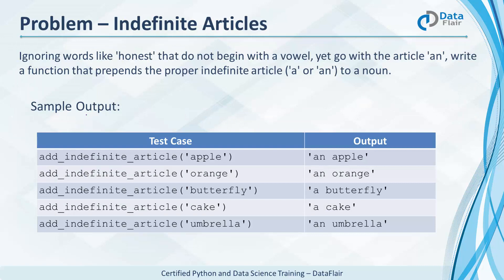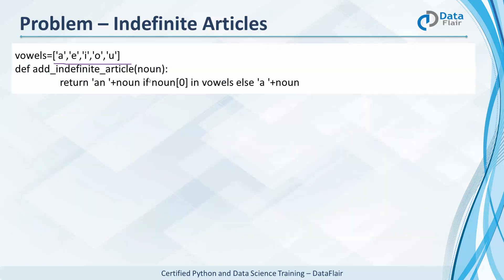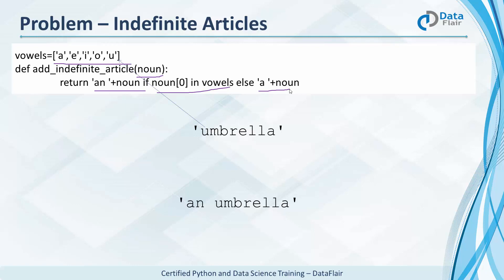Let's try another problem: indefinite articles. Some words begin with a letter like 'h' and still go with the article 'an', but for everything else, can you write a function that prepends a proper indefinite article — 'a' or 'an' — to a noun? For example: 'an apple', 'an orange', 'a butterfly', 'a cake', 'an umbrella'. This is the list of the five vowels. The function takes a noun; if the first letter is a vowel, it prepends 'an' and returns the string, otherwise it prepends 'a'. Since 'umbrella' begins with a vowel, the condition is true, so it prepends 'an' and returns it.